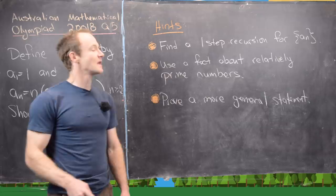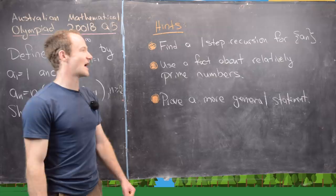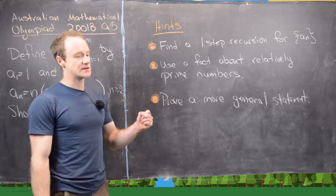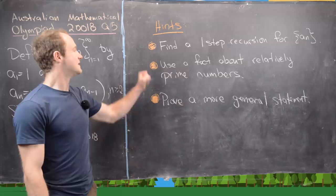So here's some hints to try as you maybe try the problem before we look at the solution. The first hint is to find a one step recursion for the terms of the sequence a_n. So we can do that actually pretty easily. We can write a_n in terms of just a_{n-1}.